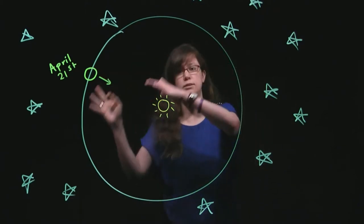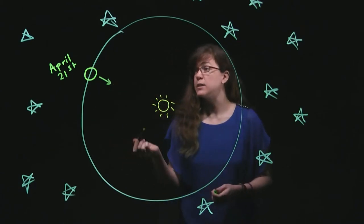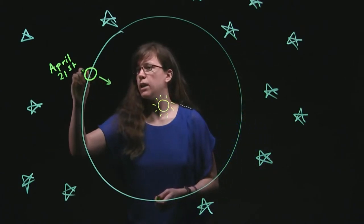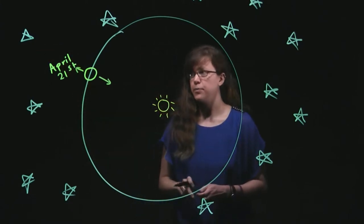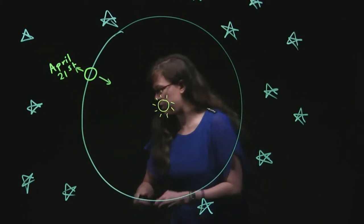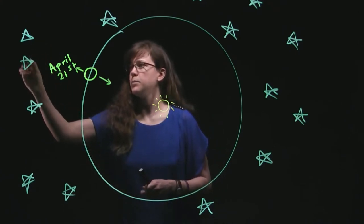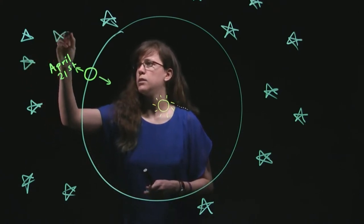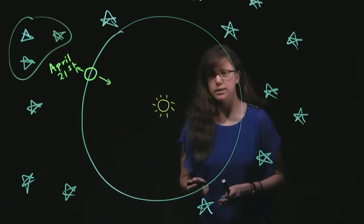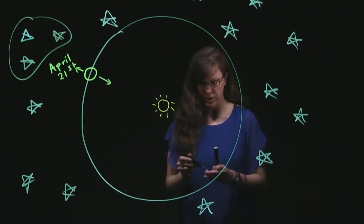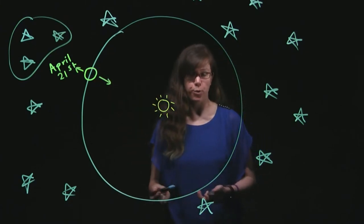As the Sun rises and sets, those stars will rise and set as well. If it's nighttime, we look in the opposite direction, and then we would see stars that are high in the nighttime sky. We would be able to see this set of stars really high in the midnight sky on April 21st, because they are as far away from the Sun as possible.